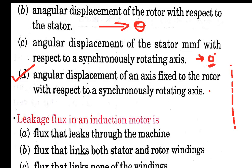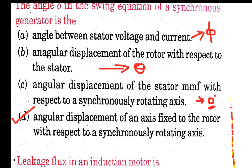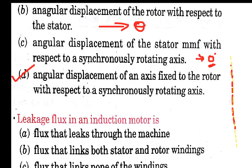For option D, let us assume the red color line represents the synchronously rotating axis and the yellow color line represents the axis fixed to the rotor. When the machine is synchronized, the red and yellow axes coincide with each other.